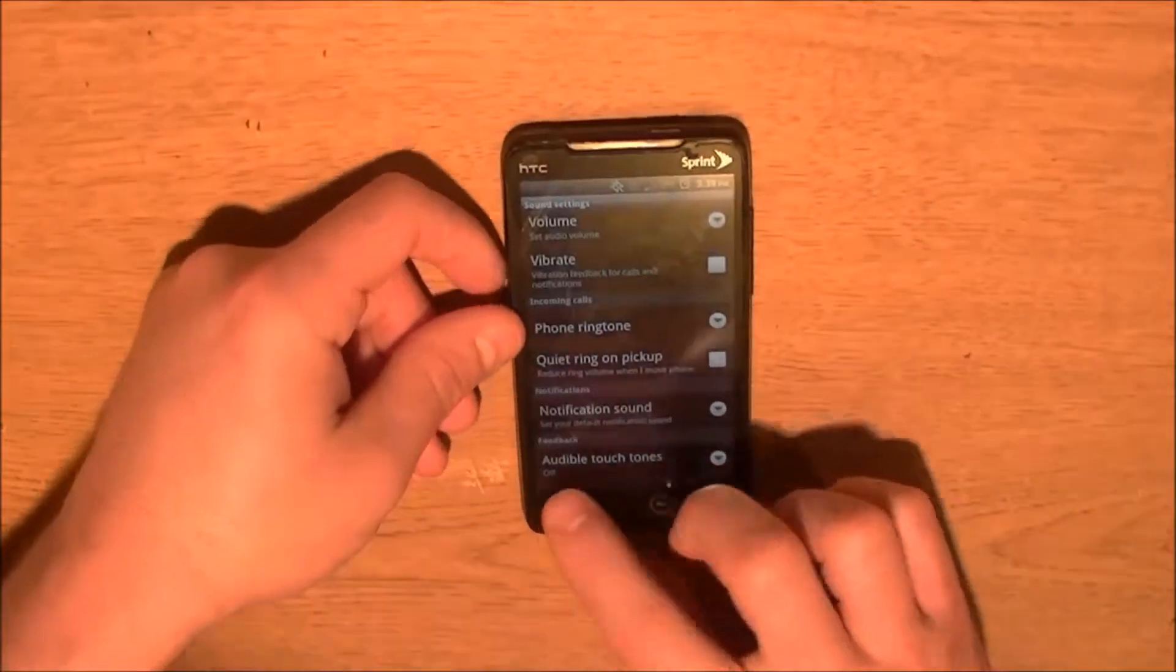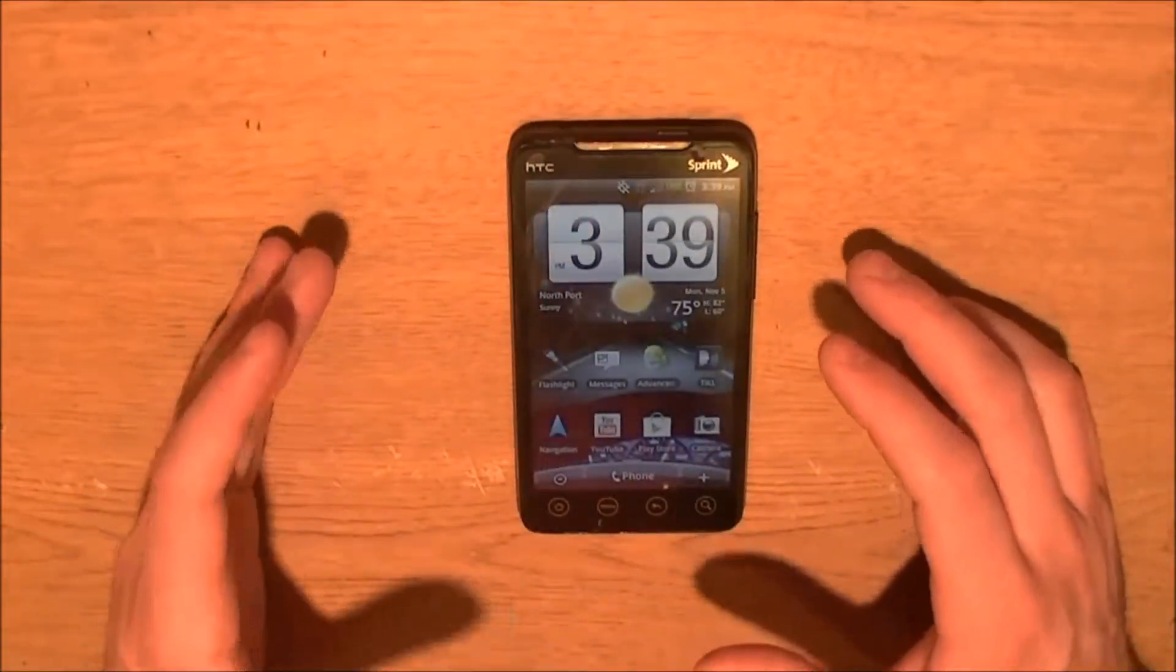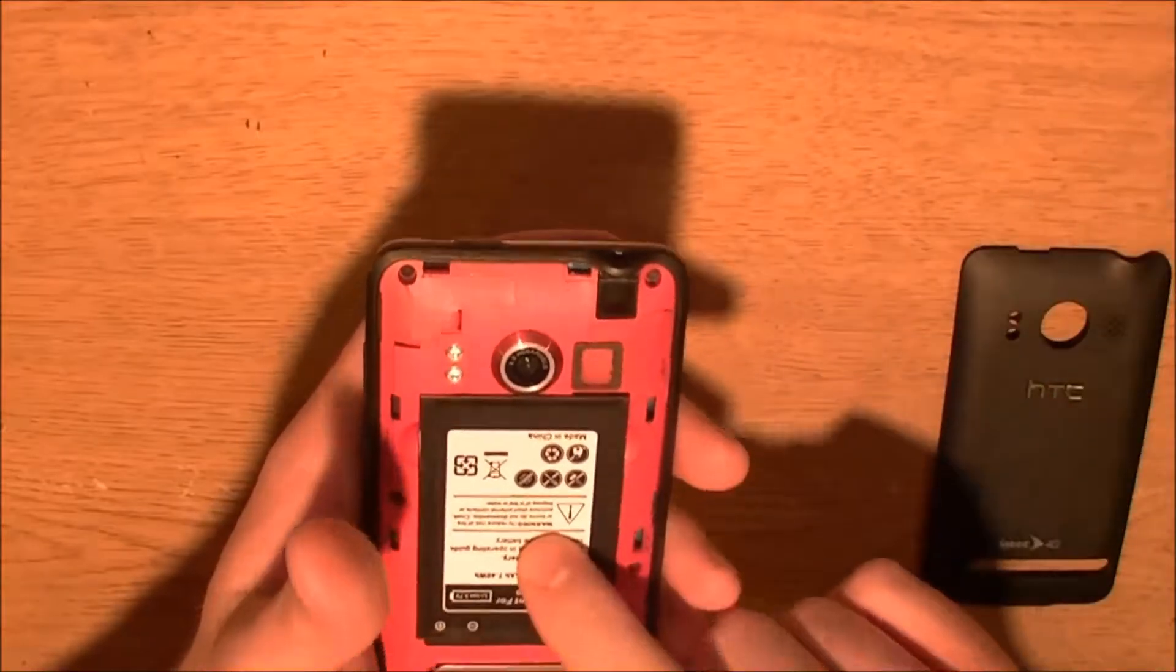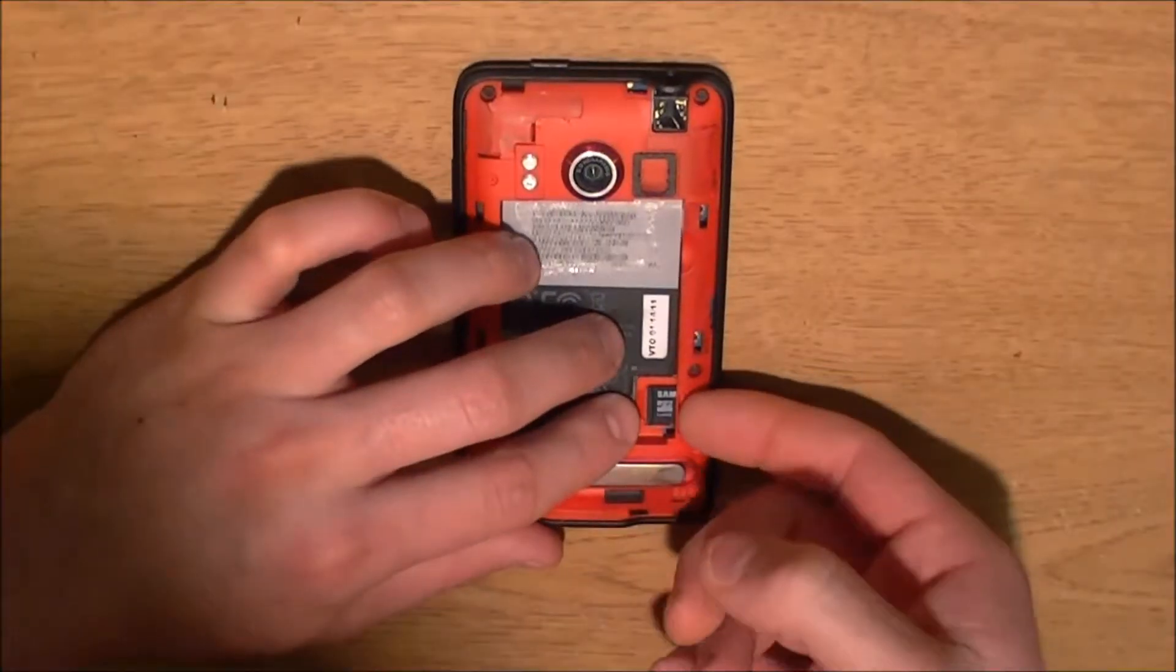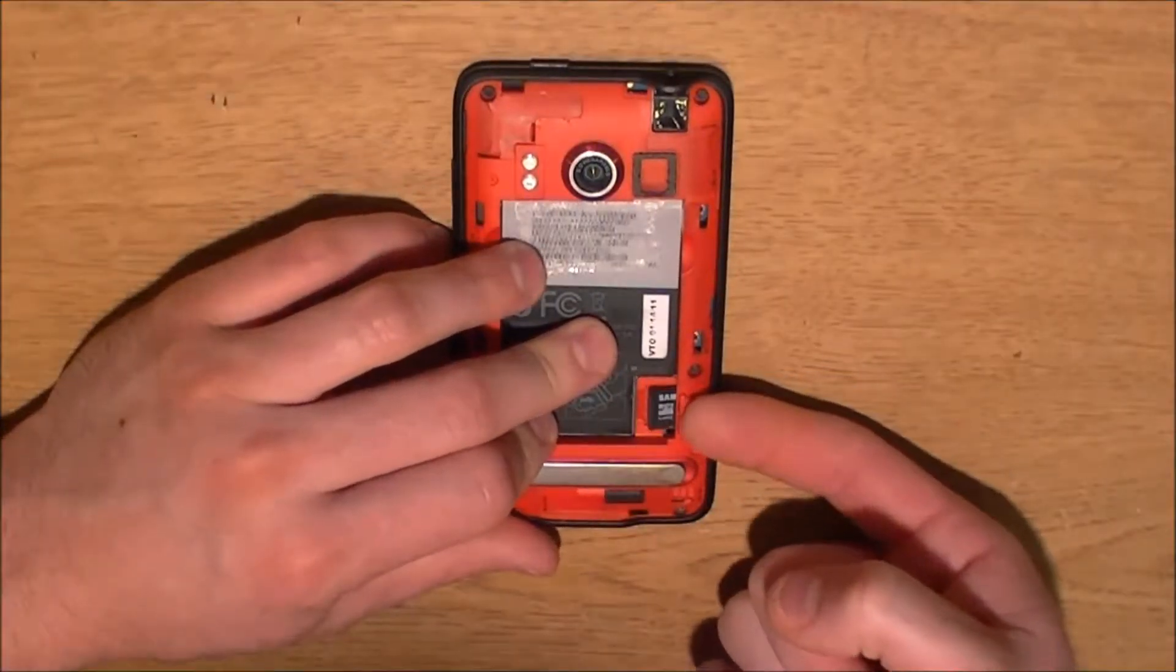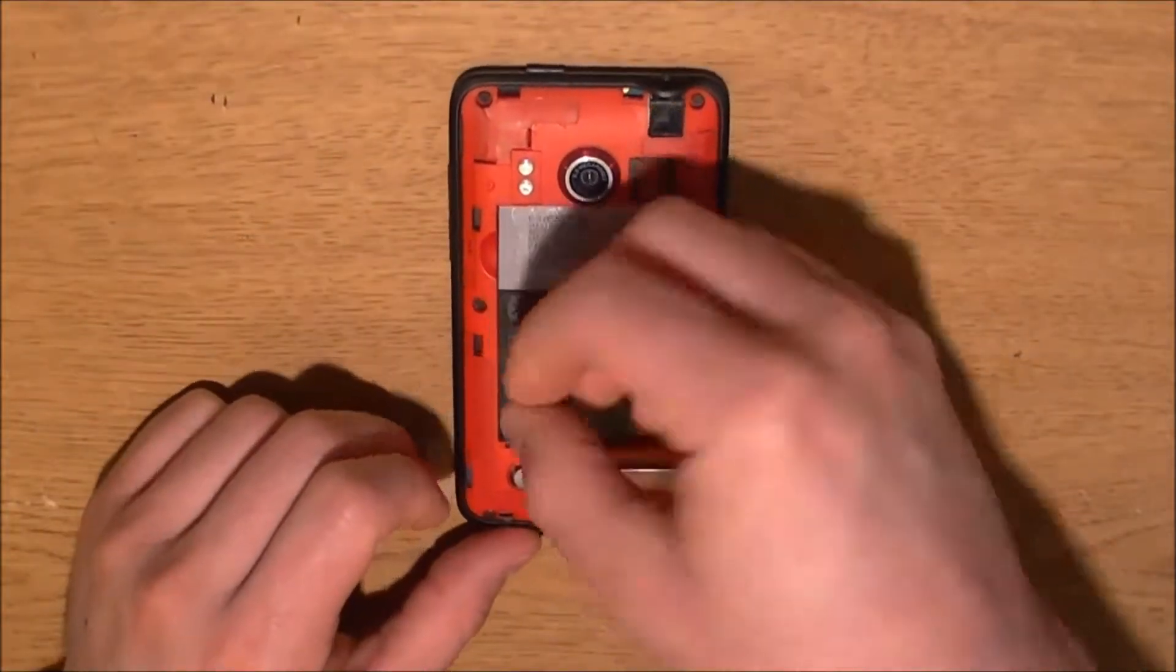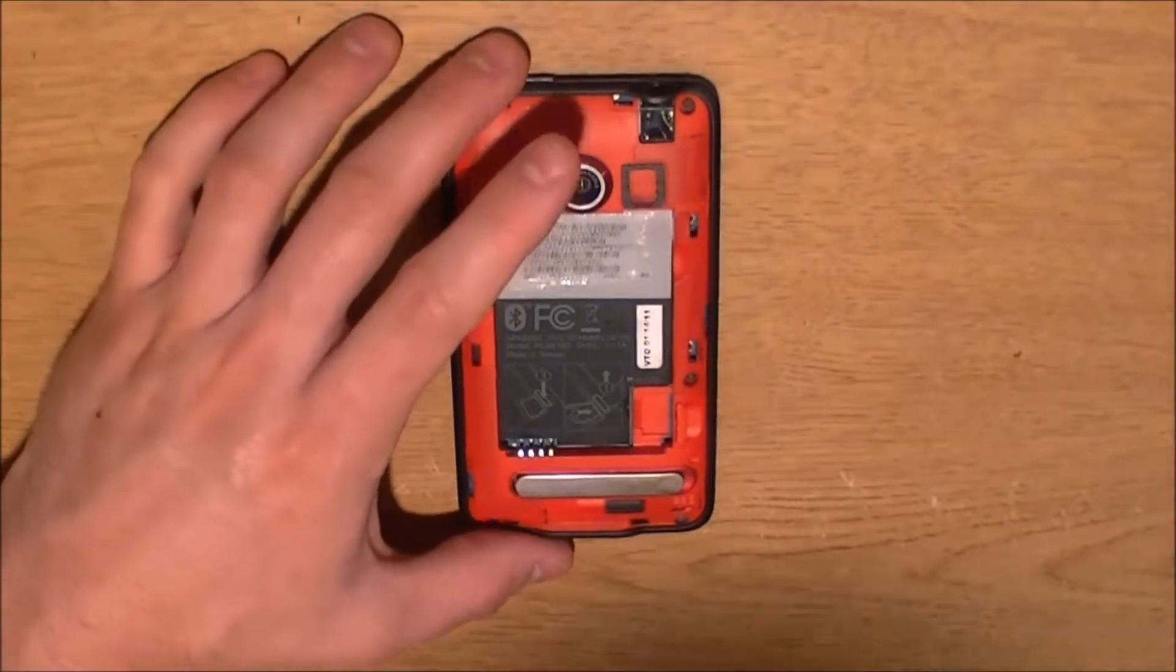Okay, so here's how we're going to fix that. First, you're going to go ahead and take the back off the phone. Then you're going to pull your battery. After that, you're going to go ahead and pull this little clip right here straight up. And you're going to take your microSD card out.